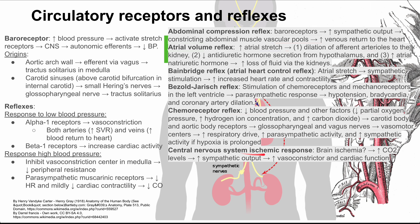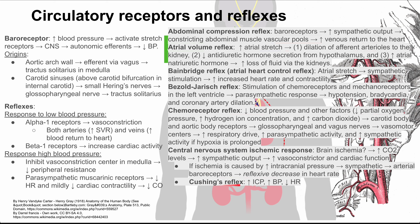Next is the central nervous system ischemic response, which leads to Cushing's reflex. In response to increased carbon dioxide levels — usually from brain ischemia — you'll have increased sympathetic output, which increases vasoconstrictor tone and cardiac function, just like we saw with beta-1 and alpha-1 receptors. If ischemia is caused by increased intracranial pressure, sympathetic stimulation leads to arterial baroreceptor activation and a reflexive decrease in heart rate. This is how you get Cushing's reflex: high intracranial pressure, high blood pressure, but a decreased heart rate.